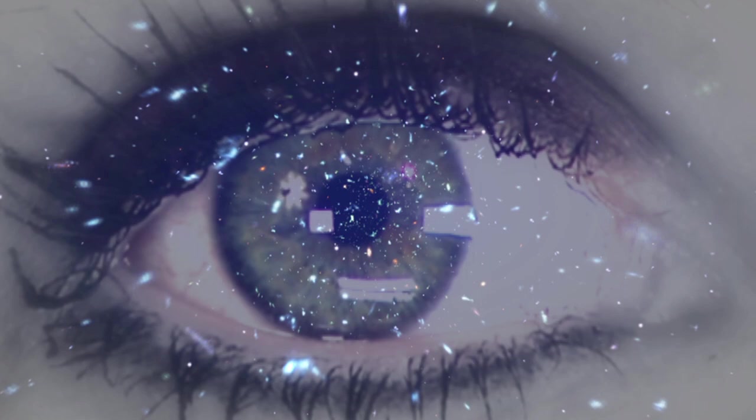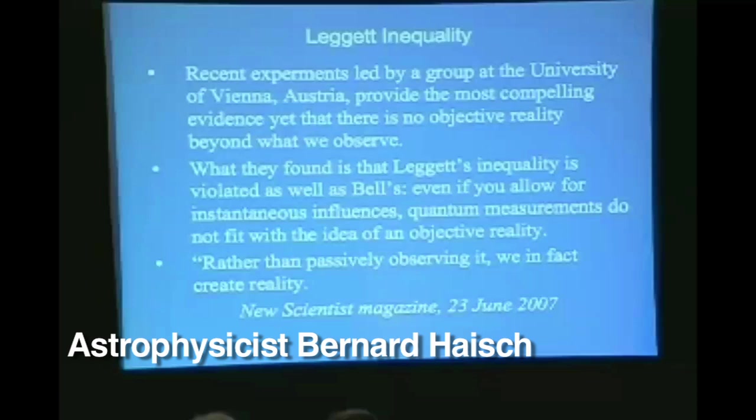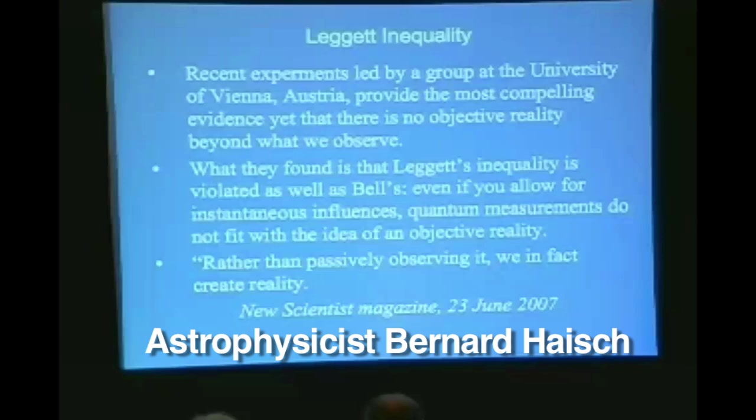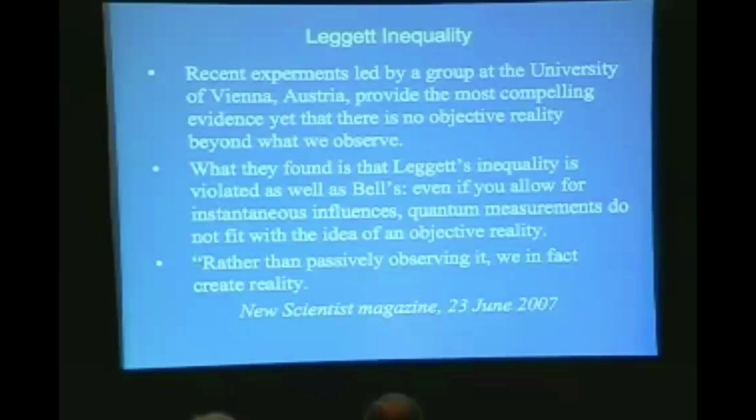Recent experiments led by a group at the University of Vienna, Austria, provide the most compelling evidence yet that there is no objective reality beyond what we observe. So it's really the observation that creates the reality. What they found is that Leggett's inequality is violated as well as Bell's. Even if you allow for instantaneous influences, quantum measurements do not fit with the idea of an objective reality. So as they say in the magazine, rather than passively observing it, we in fact create reality.